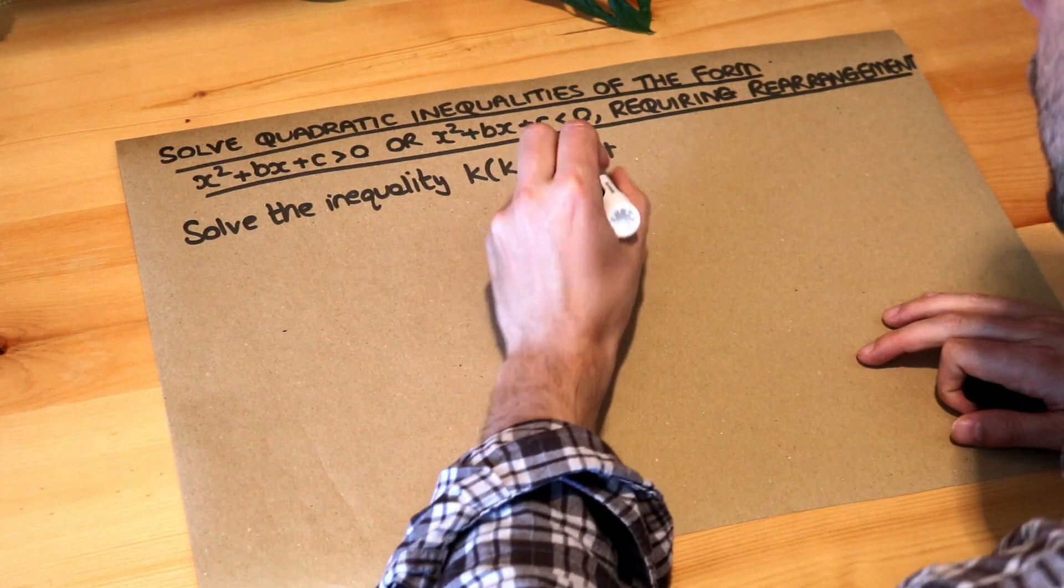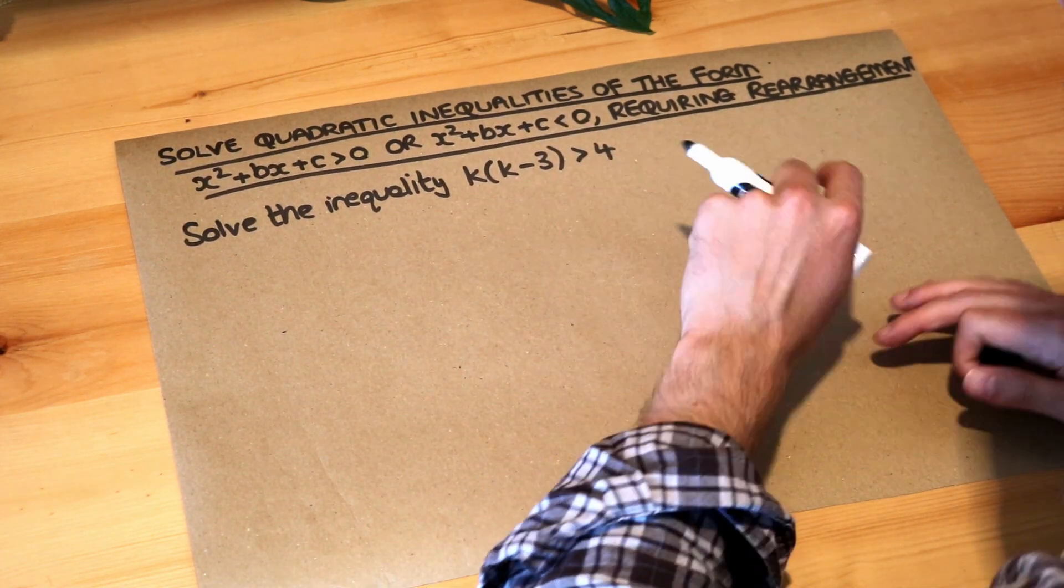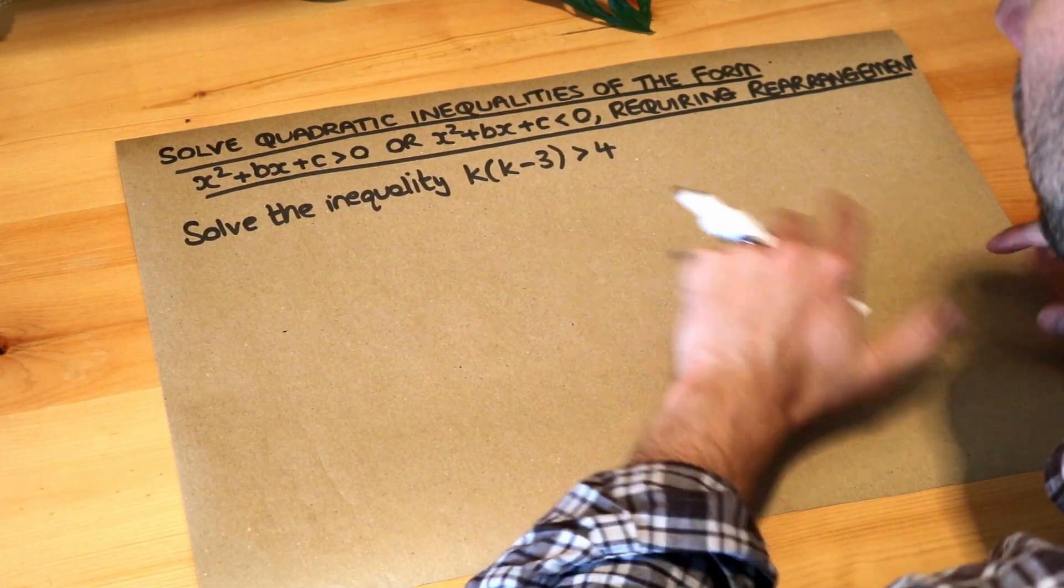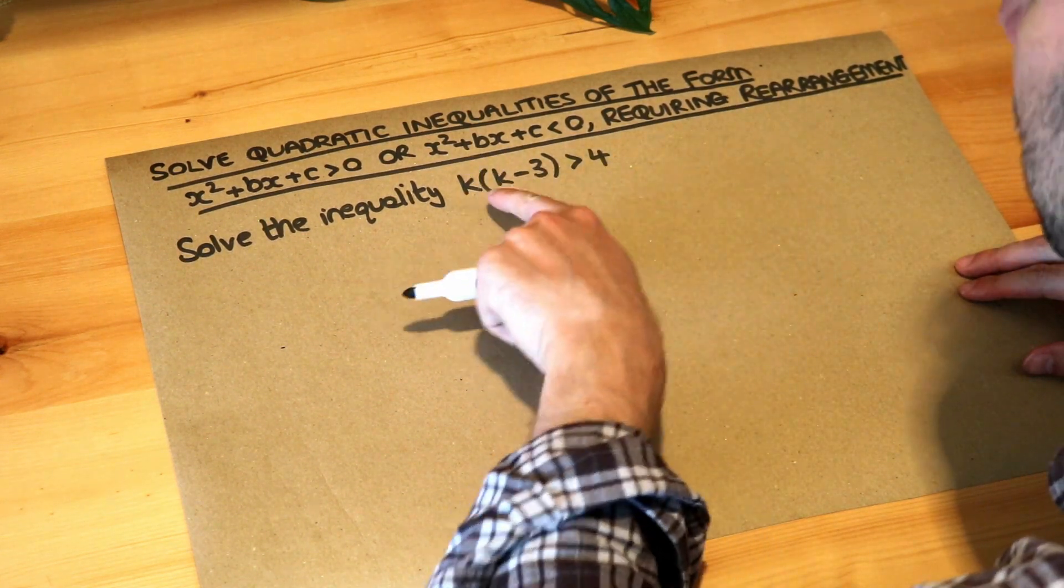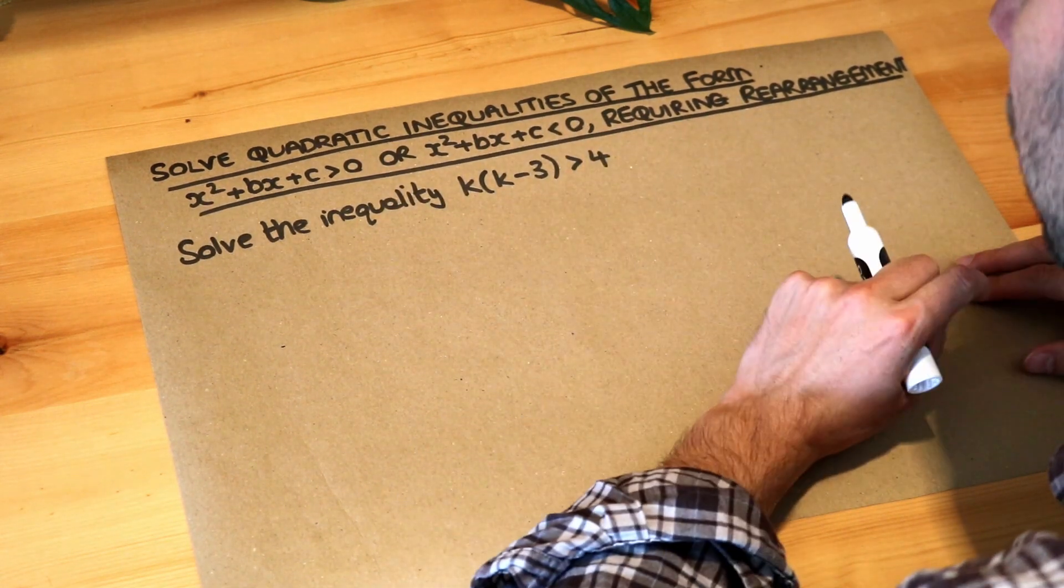Now we want to solve the inequality k times k minus three is greater than four. As implied by the title, we should probably get this quadratic inequality in a form where there's no brackets anymore and we have zero on one side of the inequality.